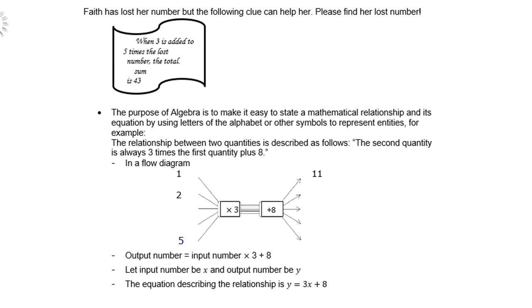The purpose of algebra is to make it easy to state a mathematical relationship and its equation by using letters of the alphabet or other symbols to represent entities. For example, the relationship between two quantities is described as follows: the second quantity is always 3 times the first quantity plus 8. In a flow diagram, you can see times 3 plus 8. Output number equals input number times 3 plus 8. Let input number be x and output number be y, therefore the equation describing the relationship is y equals 3x plus 8.